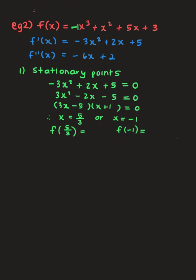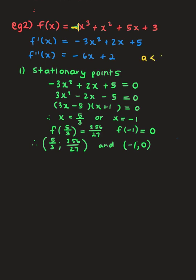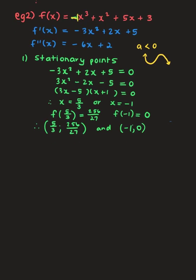So the stationary points are (5/3, 256/27) and (-1, 0). With two stationary points and 'a' negative, I already have the orientation in my mind. Note that (-1, 0) is also on the x-axis, so the graph will turn on its x-intercept again. Let's now find the x-intercepts.